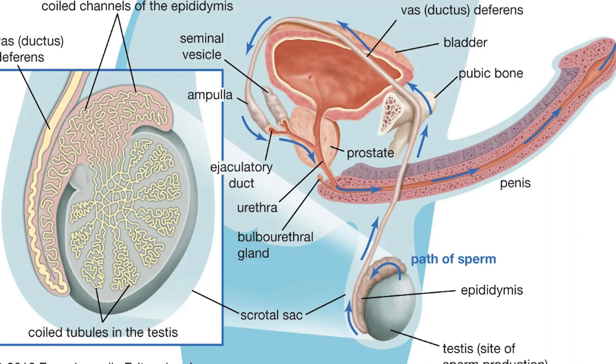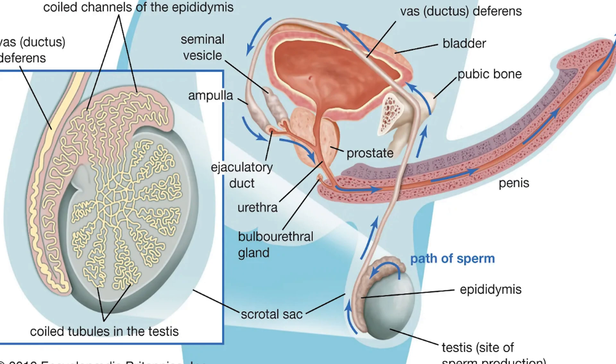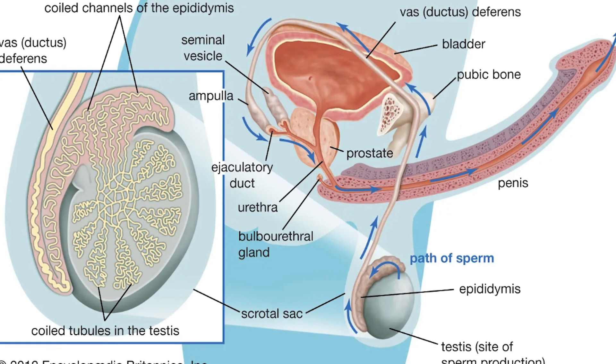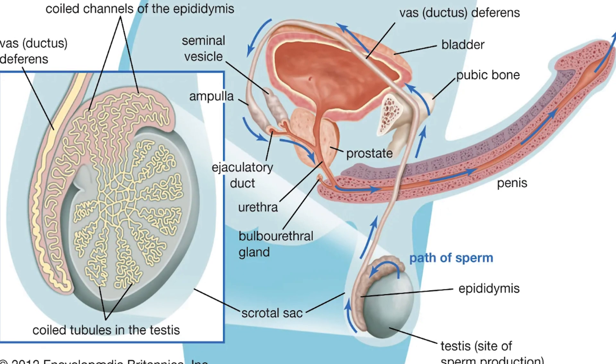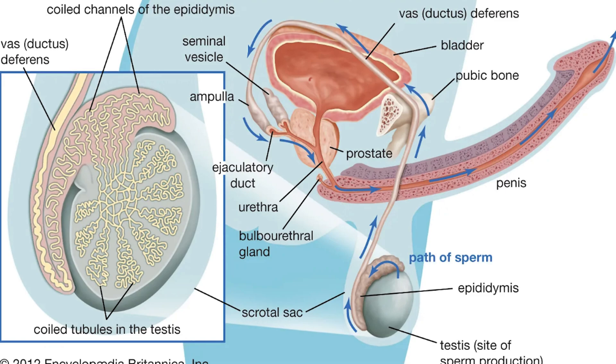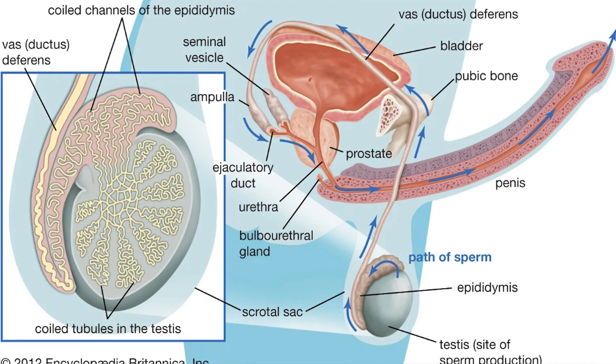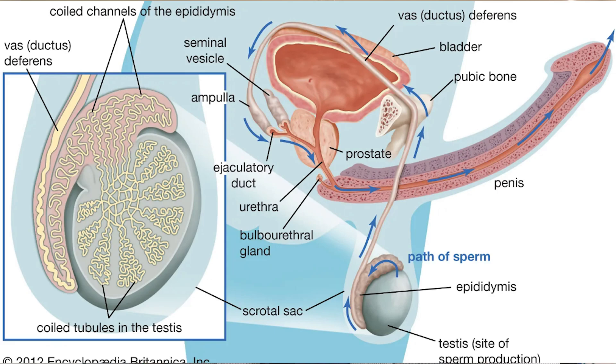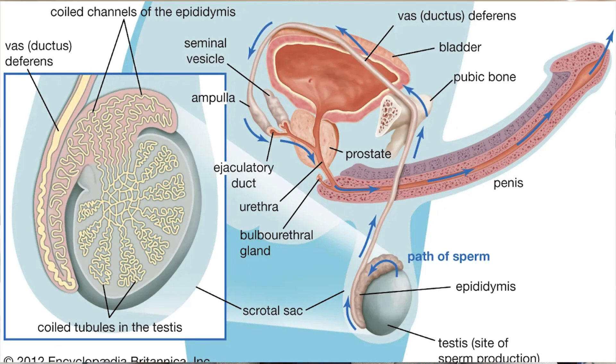The sperm that is produced in the testes travels through the appropriate channels into the prostatic region, where the prostate joins this fluid with the seminal fluid during ejaculation. Whenever you ejaculate, the sperm is released into the prostatic canal and combined with prostatic seminal fluids, which are then ejaculated out of the urethra into the vagina. That's the function of the prostate, which is a very important gland.